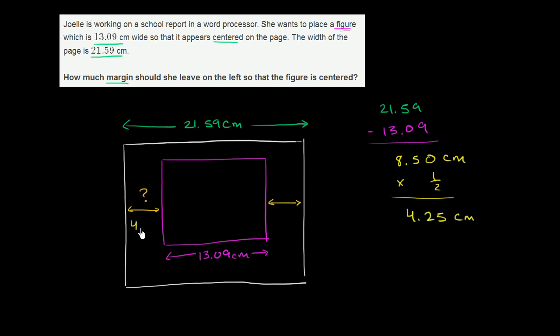So if we want it centered, this is going to be 4.25 centimeters. And of course, this is also going to be 4.25 centimeters. When you add 4.25 to 4.25, you get 8.5 centimeters. And then you add that to 13.09, you get the entire width of the piece of paper. So how much margin should she leave on the left? 4.25 centimeters.